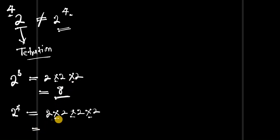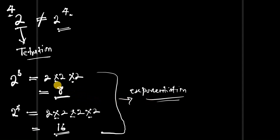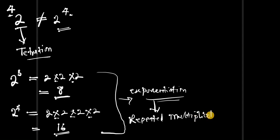So 2 times 2 is 4, 4 times 2 is 8, and 8 times 2 is 16. If you look at what we have here, this is normal exponentiation. In exponentiation we have repeated multiplications — this is what we are used to.